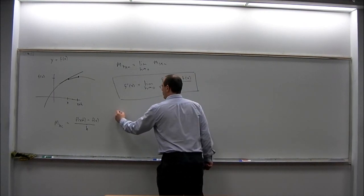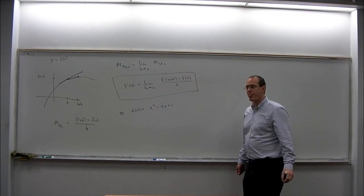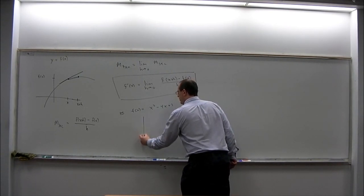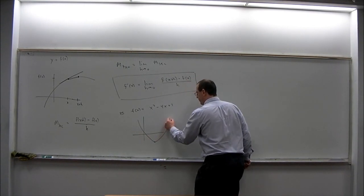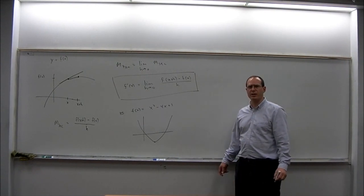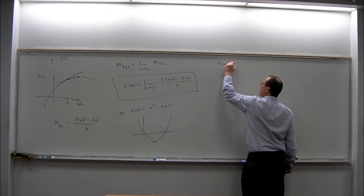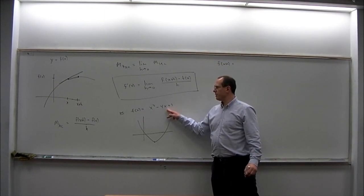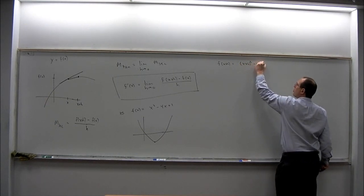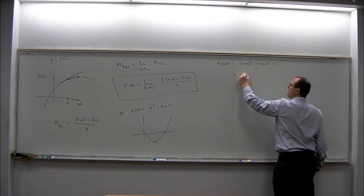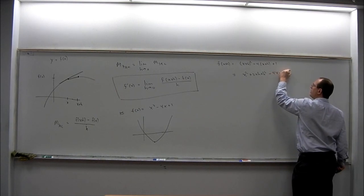I'll do two examples. We'll start with the quadratic polynomial f of x equals x squared minus 4x plus 1. This is a parabola, and if we find the derivative, that will give us a formula for the slope of the tangent line to this parabola at any point. To do that, we need to know what f of x plus h is. We replace the x's with x plus h, giving us x plus h quantity squared, minus 4 times x plus h, plus 1. Expanding, that's x squared plus 2xh plus h squared minus 4x minus 4h plus 1.